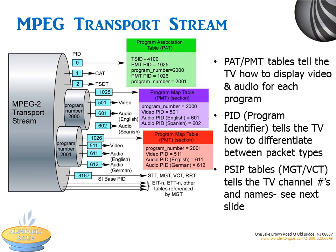The PAT and PMT tables tell the TV how to display video and audio for each program. PAT stands for Program Association Table, and PMT stands for Program Map Table. The PAT is the base table for the PSI and provides the complete list of MPEG programs in the service multiplex. CAT and TSDT are the conditional access and transport stream description tables. Here, the two programs are 2000 and 2001. For Program 2001, the PMT is 1026 and the Video Program Identifier, or PID, is 511. The PID tells the TV how to differentiate between packet types; it contains the header of each transport stream packet and is the key to sorting out the elements in the transport stream.